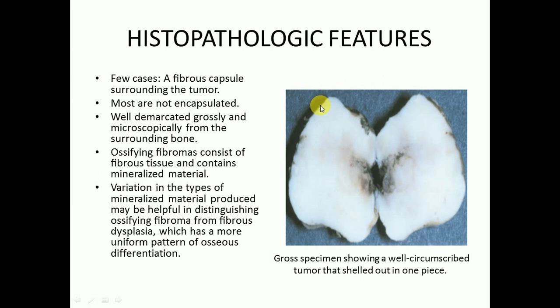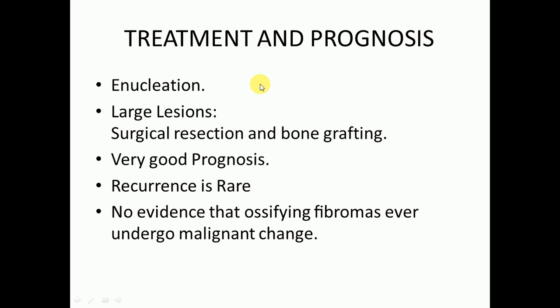Regarding treatment and prognosis: if the lesion is smaller in size, enucleation can be performed. If the lesion is larger, surgical resection and bone grafting will be needed. The prognosis of this disease is very good and recurrence is very rare. There is no evidence that ossifying fibromas ever undergo malignant transformation.